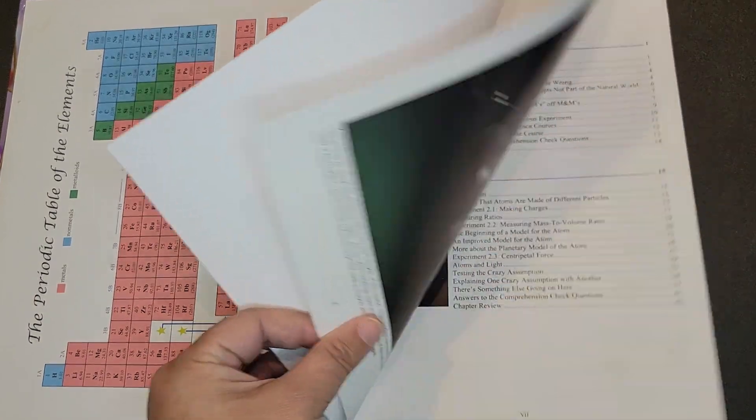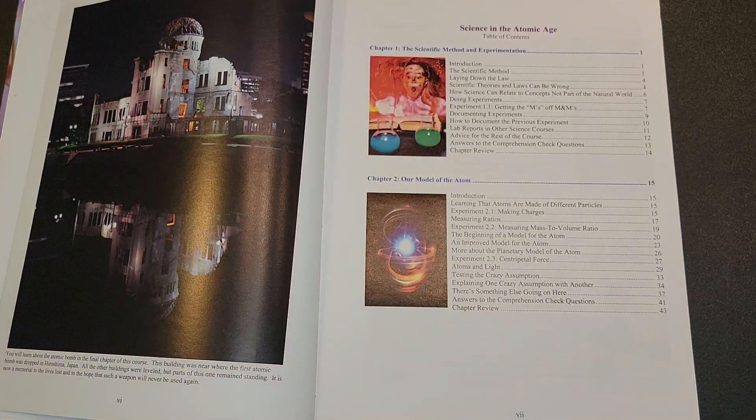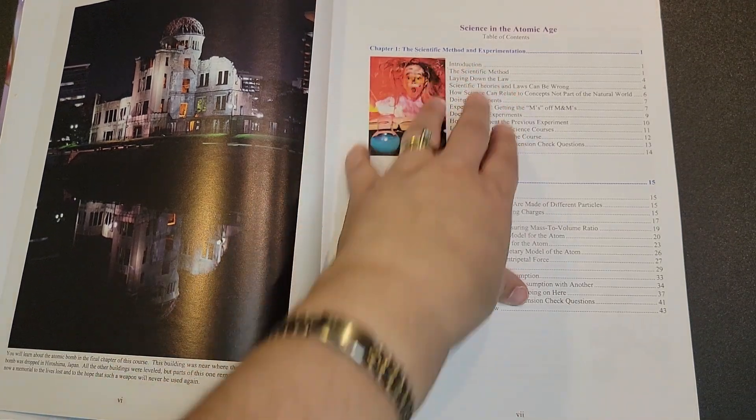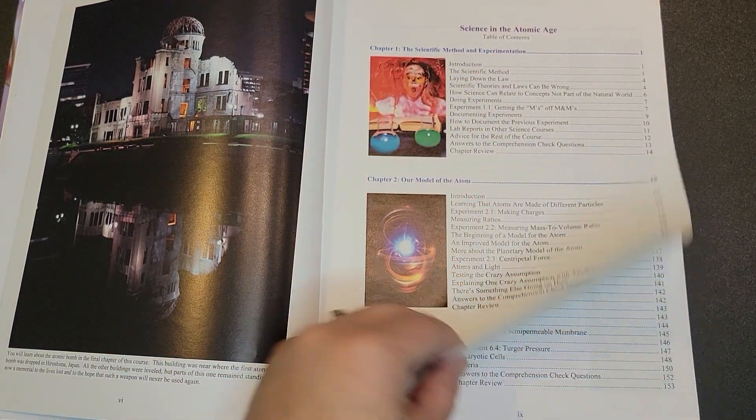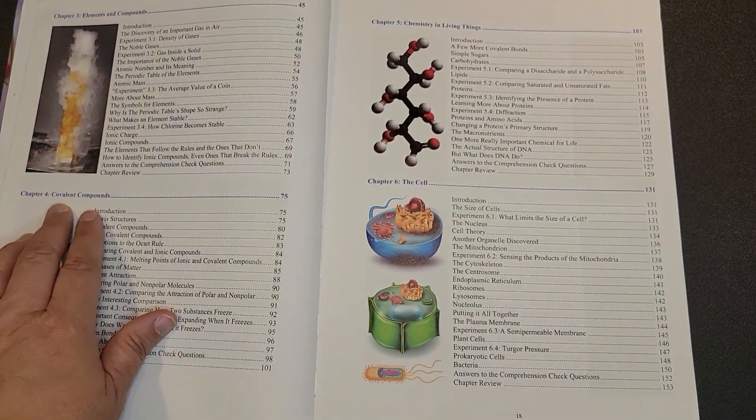This is a laboratory-based class, so you're going to be doing quite a few experiments in the class. The content that you are going to be studying is the scientific method and experimentation, our model of the atom, elements and compounds, and covalent compounds.